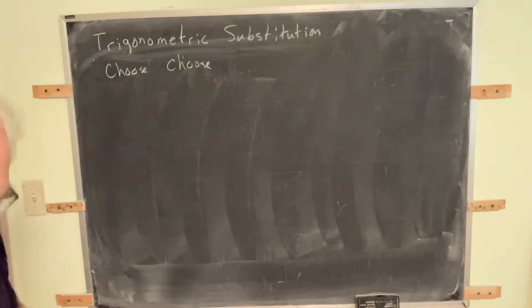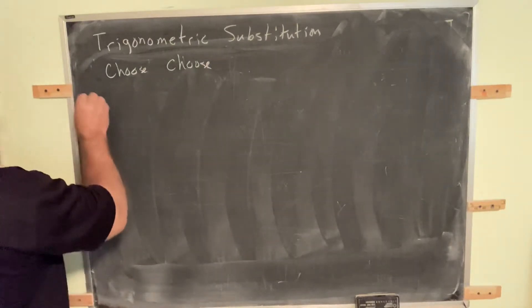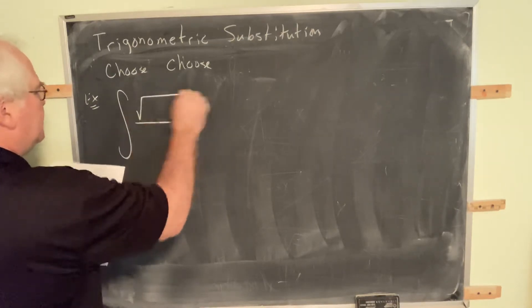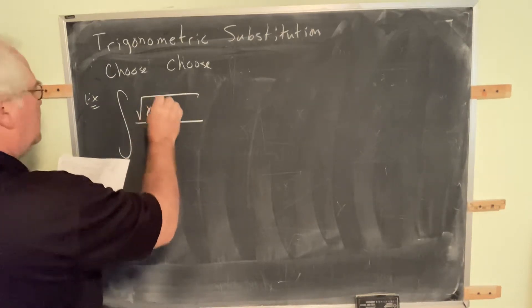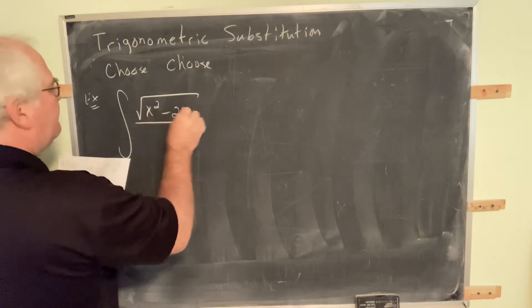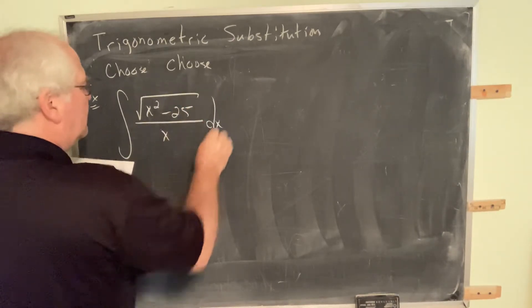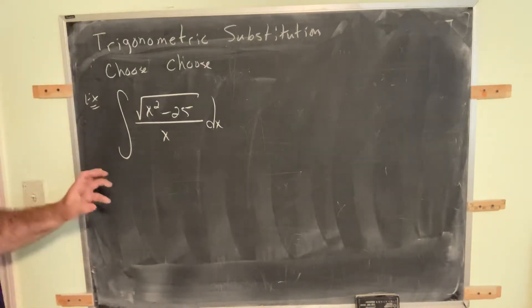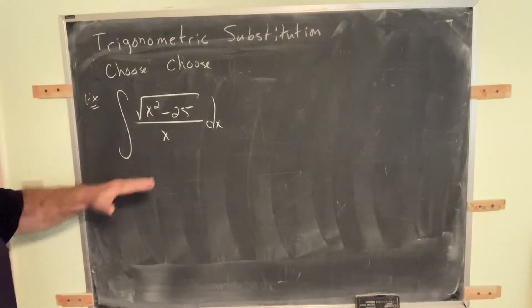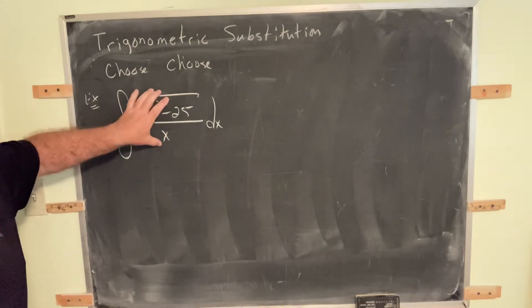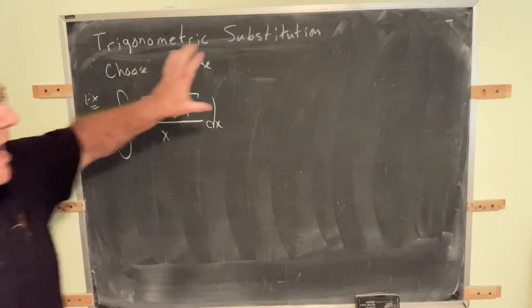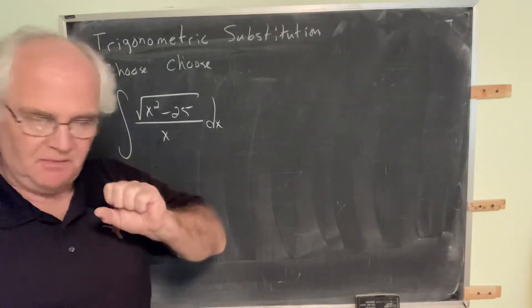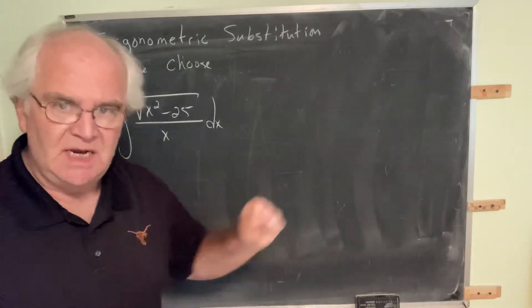So the next procedure is this. Here's my little example I'm going to play through. I have the square root of x squared minus 25 over x dx. What's going to happen is, label the triangle, make some choices, and then this is going to be turned into a trigonometric integral from the previous section, and then you proceed as before.